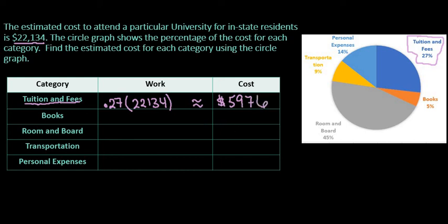For the next category, what we have is books. So we're going to find books over here, and books represent 5% of our cost. So we would do 0.05 times 22,134, and to the nearest whole dollar, this is going to give us approximately $1,108 for the year.